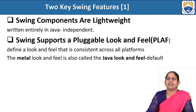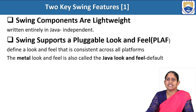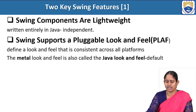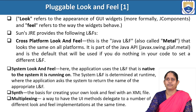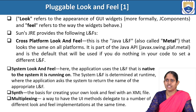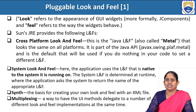The two main Swing features are that it is lightweight and supports a pluggable look and feel. It is lightweight because it is entirely written in Java, making it platform independent. It supports a pluggable look and feel, meaning it defines a look and feel that is consistent across all platforms. The Metal look and feel is the Java look and feel, which is the default view for the Swing platform. The cross-platform look and feel, also called Metal, looks the same on all platforms and is the default if no specific look and feel is set in your code.